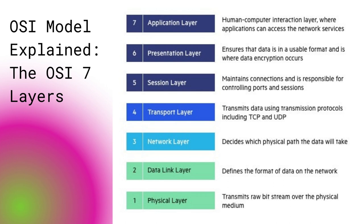The OSI model explains seven layers. Starting from the bottom, they are: physical layer, data link layer, network layer, transport layer, session layer, presentation layer, and the application layer on top. As shown here, the layers are stacked one on top of the other and the numbering is from bottom to top.